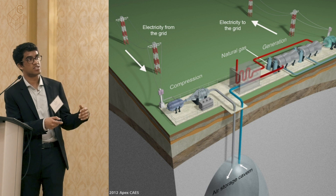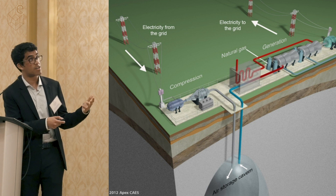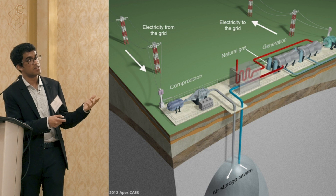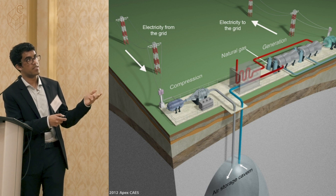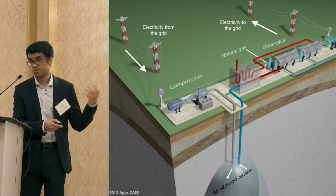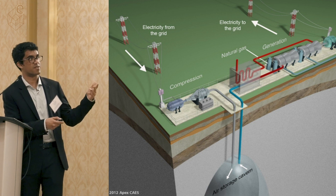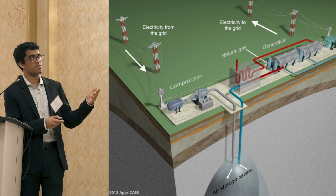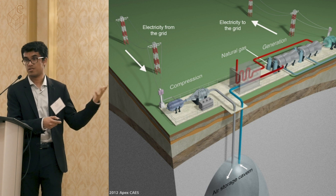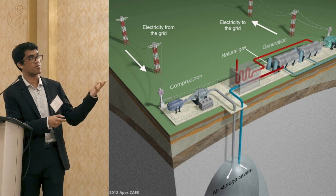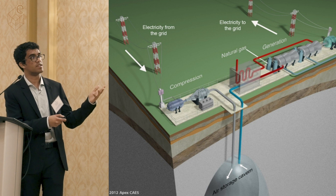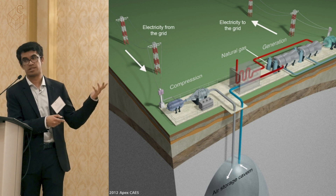This is where we make the distinction between a diabatic and an adiabatic system. A diabatic system introduces natural gas into the air to heat it up, just like a regular gas expander, producing electricity. An adiabatic alternative involves some form of heat recovery elsewhere — like a geothermal reservoir — or taking waste heat from the compressor and reintroducing it via heat exchange into the gas.